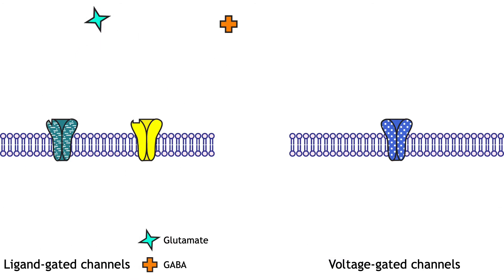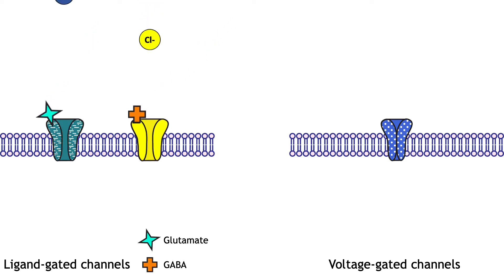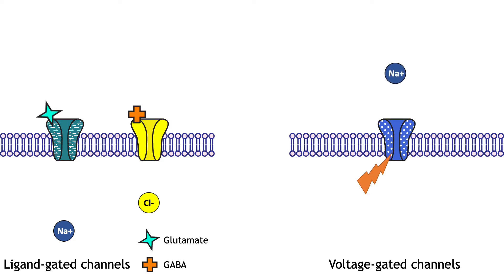Although ionotropic receptors are ion channels, they open in a different way than the voltage-gated ion channels needed for propagation of the action potential. Ionotropic receptors are ligand-gated, which means that a specific molecule, such as a neurotransmitter, must bind to the receptor to cause the channel to open and allow ion flow. As seen in previous chapters, the voltage-gated channels open in response to the membrane potential reaching threshold. Both types of channels allow ions to diffuse down their electrochemical gradient.